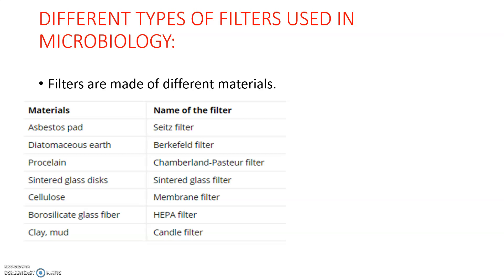Different types of filters used in microbiology are made from different materials. An asbestos pad filter is called a Seitz filter. A diatomaceous earth filter is called a Berkefeld filter. A porcelain filter is called the Chamberland-Pasteur filter. Sintered glass disk filters are called sintered glass filters. A cellulose filter is a membrane filter. A borosilicate glass fiber filter is a HEPA filter. Clay or mud filters are called candle filters.